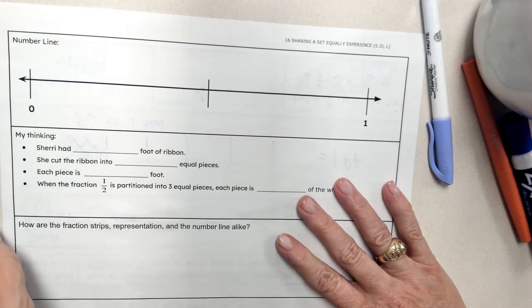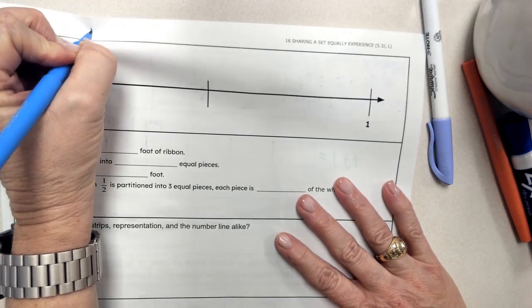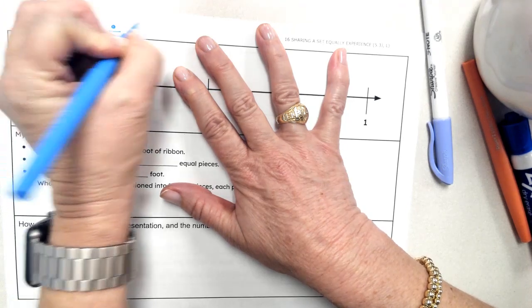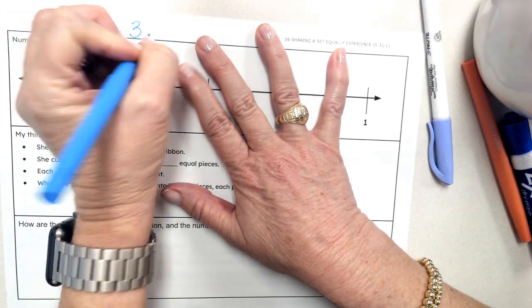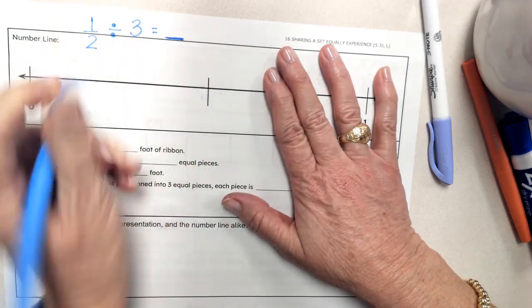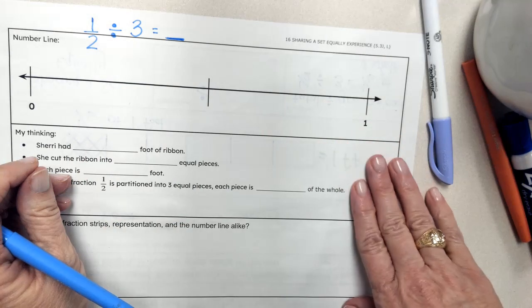So on the front, what we were doing is we were taking one half of the ribbon, we were dividing it into three equal pieces to determine the amount of each in reference to the whole foot.